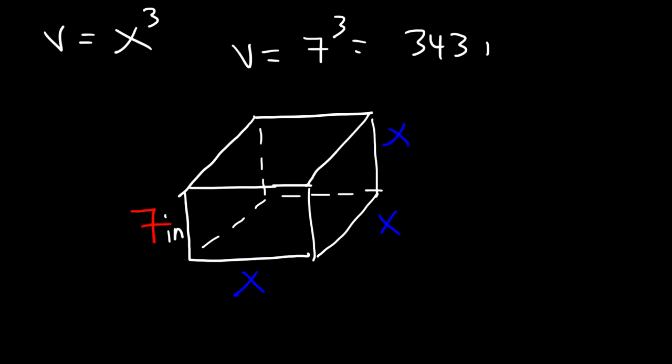So if this was 7 inches, this would be 343 cubic inches. And that's all you need to do in order to calculate the volume of a cube.